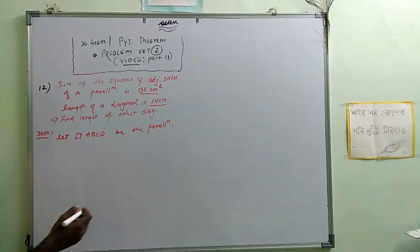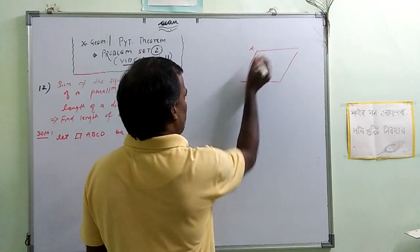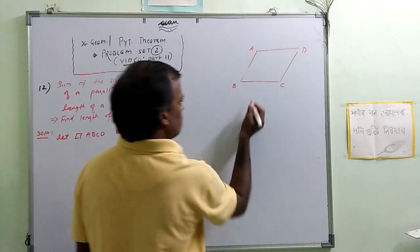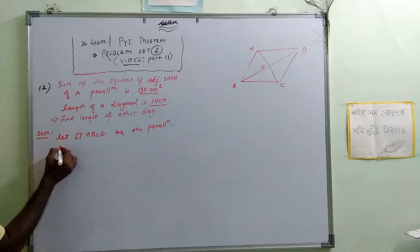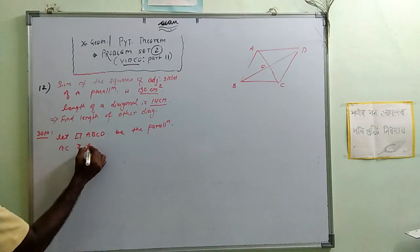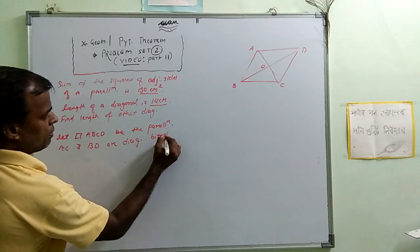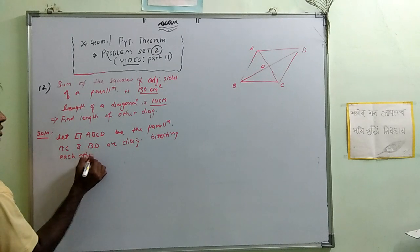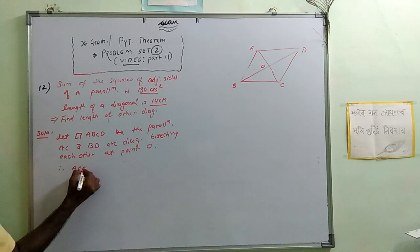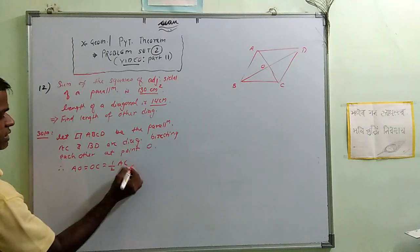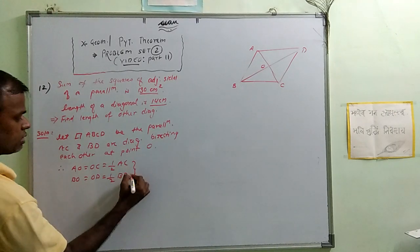So let's draw parallelogram ABCD. These are the diagonals AC and BD. The diagonals of a parallelogram bisect each other at their intersection point O. Therefore AO equals OC equals half of AC, and BO equals OD equals half of BD.